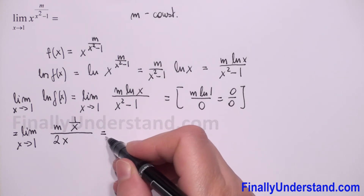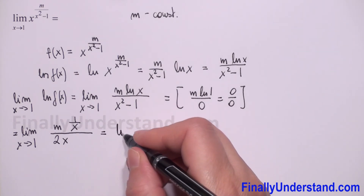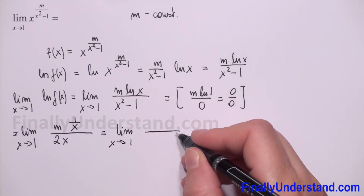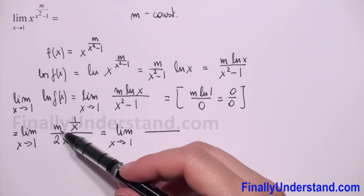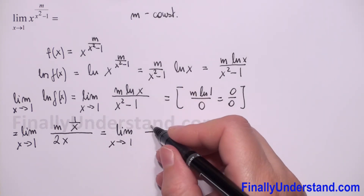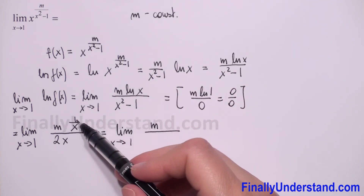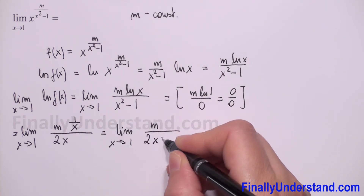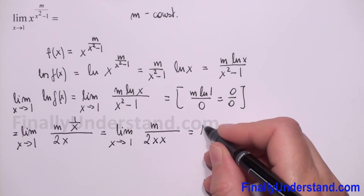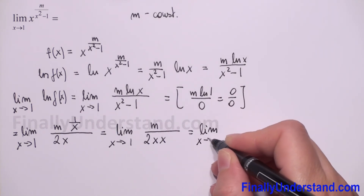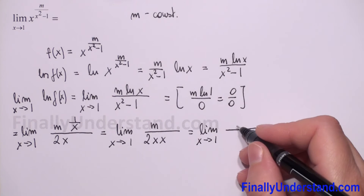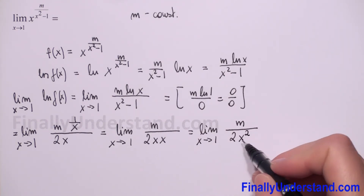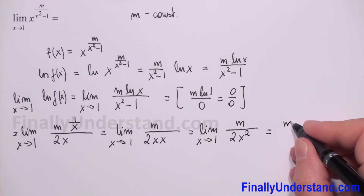So this equals the limit as x approaches 1, with m over x in the numerator and 2x in the denominator — giving m over 2x squared. As x approaches 1, this equals m over 2 times 1 squared, which is m over 2.